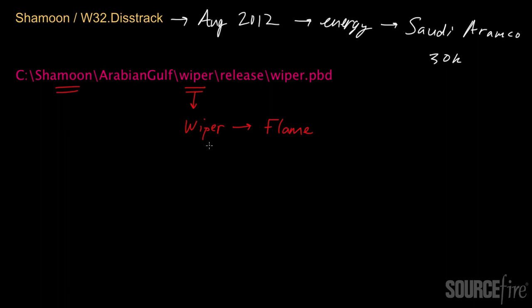The code is different underneath, and Shamoon is not nearly as sophisticated as Flame. It does not appear to have been a nation state sponsored piece of malware — not like Flame, Stuxnet, Gauss, or Duqu. The people who created Shamoon were likely part of a hacktivist group, politically motivated rather than financially motivated. They probably were inspired by wiper and decided to create a copycat attack based on that initial inspiration.